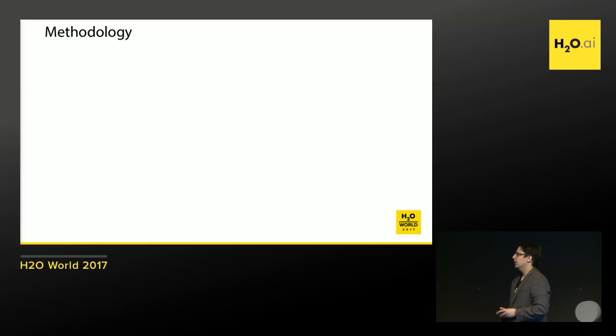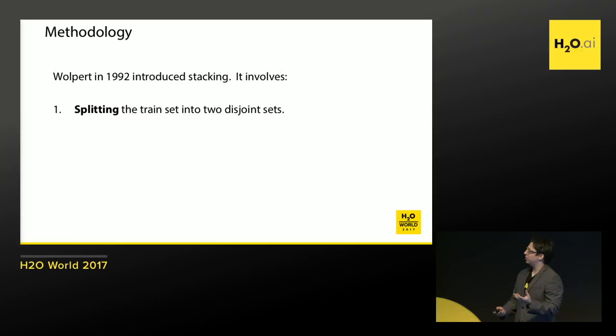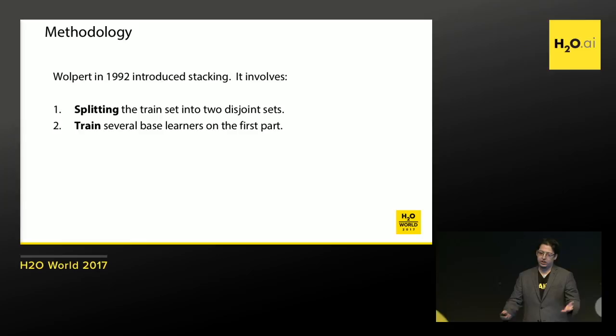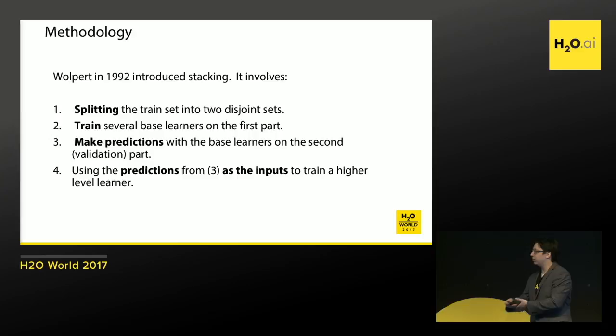One way to do this is by using a technique called stacking or stack generalization, introduced in 1992 by Wolpert. It's quite simple. You have two datasets — a training and a validation dataset. You train several models with one dataset and make predictions on the other. Then you take those predictions and treat them as a new dataset, fitting a new model to make further predictions.